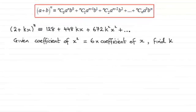Hi there. In the previous part of this question, we expanded (2 + kx)^7 using the binomial expansion and we got this series.